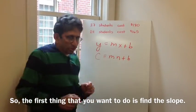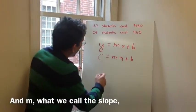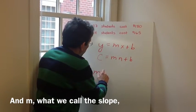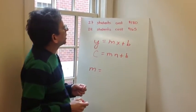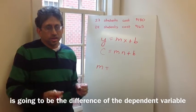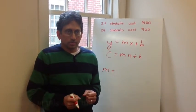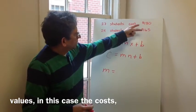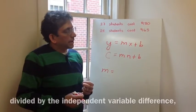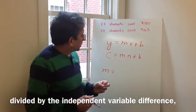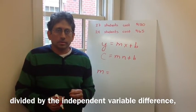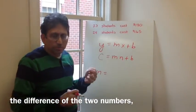The first thing you want to do is find the slope. And m, what we call the slope, is going to be the difference of the dependent variable values, in this case the costs, divided by the independent variable difference, the difference of the two numbers, which is in this case the number of students.